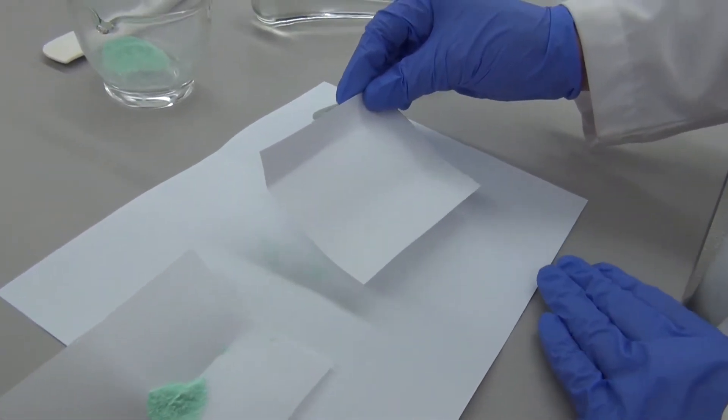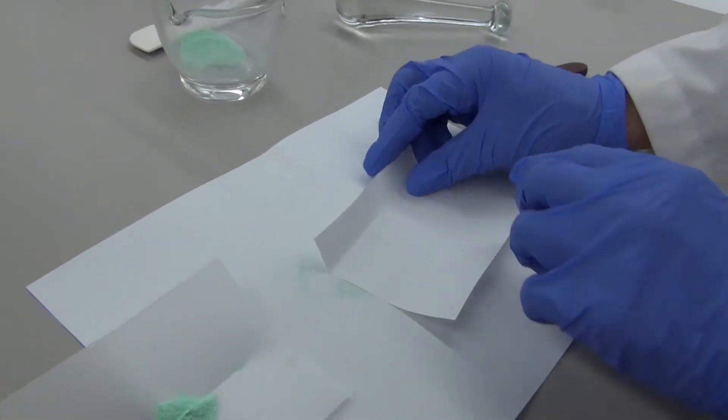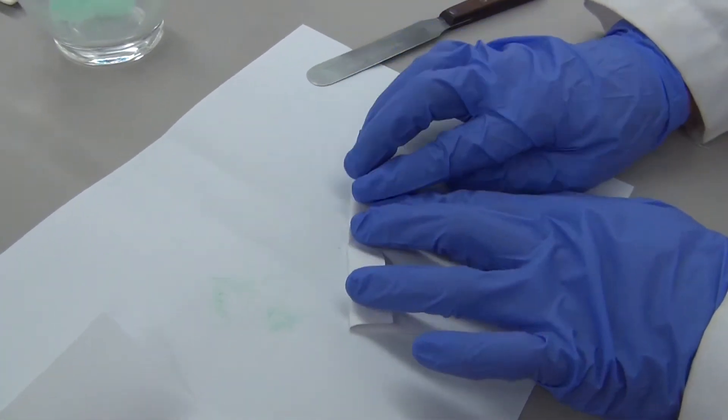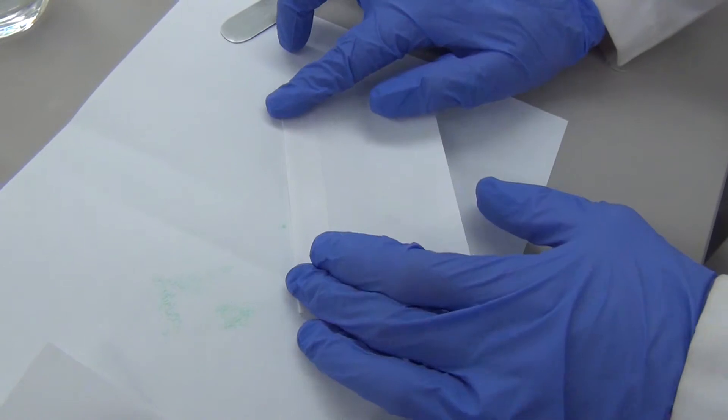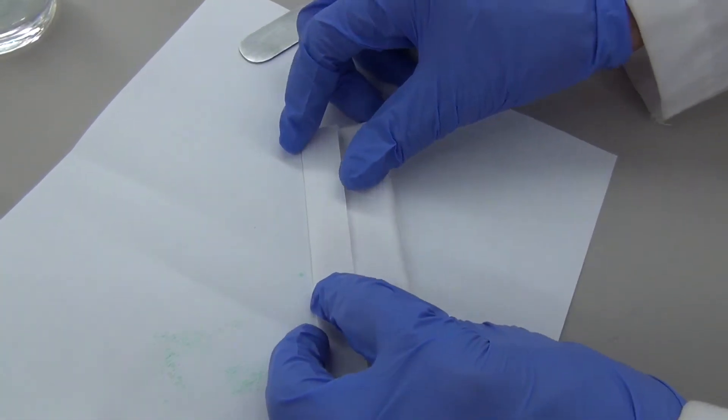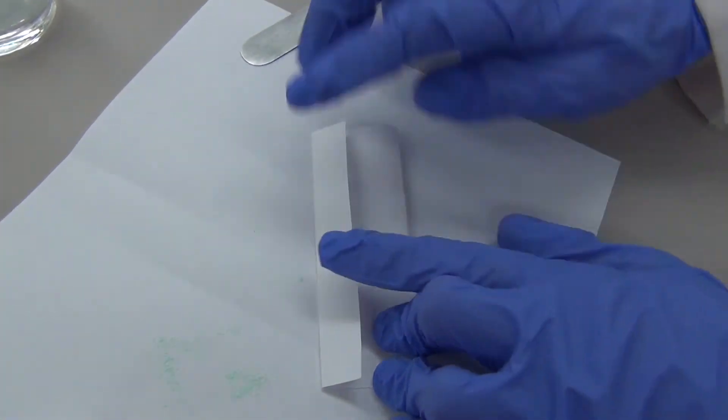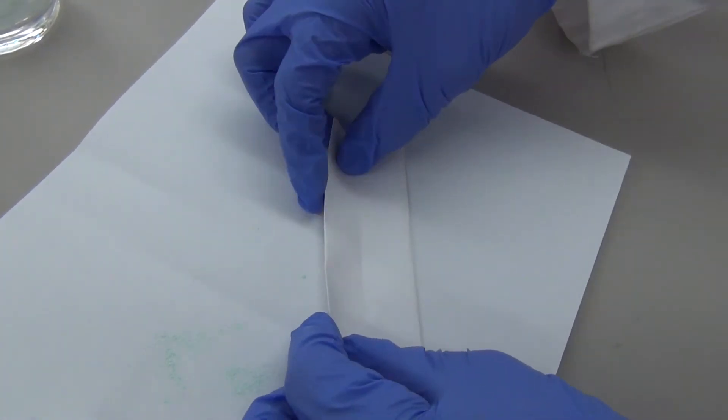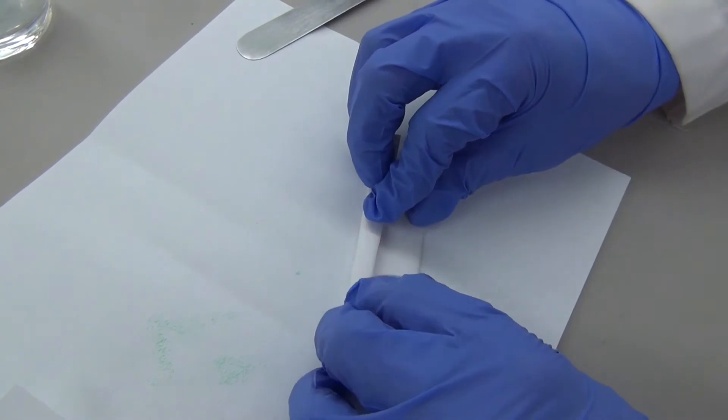The first thing you are going to want to do is fold the top of the paper down slightly. Take the bottom of the paper and fold it underneath the fold that you just made. Now go ahead and take the top and fold it over once more.